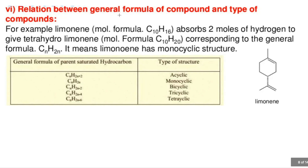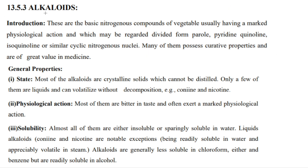There is a relationship between the general molecular formula of a compound and its structural type. Limonene has molecular formula C₁₀H₁₆ and absorbs two moles of hydrogen to give tetrahydrolimonene with formula C₁₀H₂₀, corresponding to CₙH₂ₙ, which means limonene has a monocyclic structure. In general: CₙH₂ₙ₊₂ indicates an acyclic structure, CₙH₂ₙ indicates a monocyclic structure, and CₙH₂ₙ₋₂ indicates a bicyclic structure, and so on.